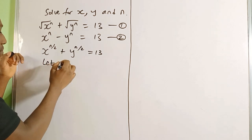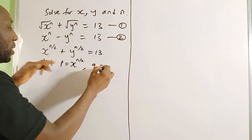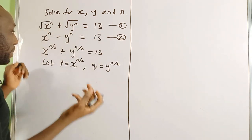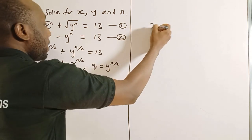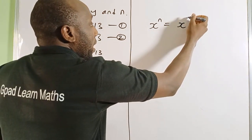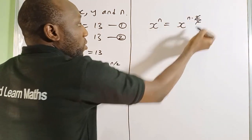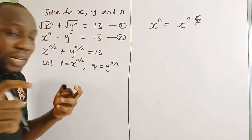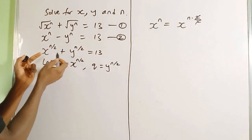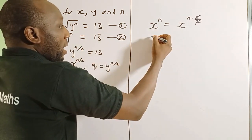I can say let p equal x raised to power n over 2, and let q equal y raised to power n over 2. Now let's look at what happens to the second equation. Note that x raised to power n is the same as x raised to power n times 2 over 2, because the 2s cancel to give x raised to power n. I want to bring this n over 2 form into the second equation.